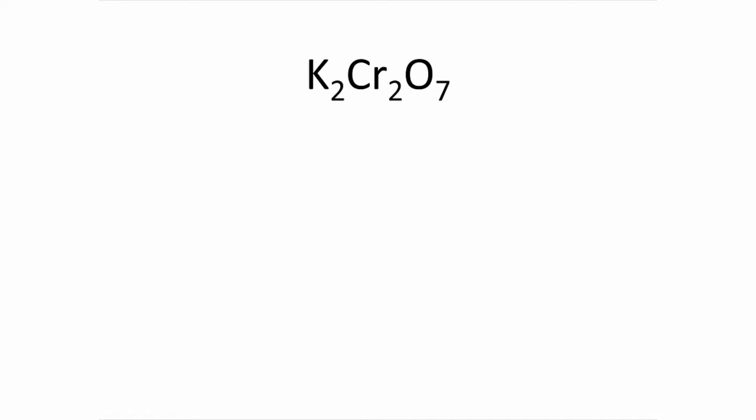We interrupt this important practical broadcast to share some occupational health and safety information with you. Potassium dichromate, which has been used for this test regularly in the past, is now on the known carcinogen list, so we don't want to expose you to that. Instead, we'll be using potassium permanganate.